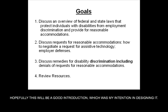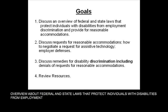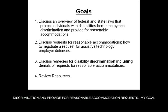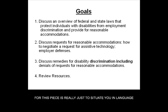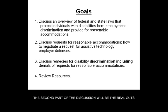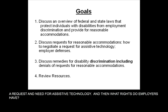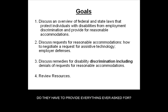The parts I've broken today's discussion into: first we'll talk about a general overview of federal and state laws that protect individuals with disabilities from employment discrimination and provide for reasonable accommodation requests. My goal is to situate you in language and the names of relevant statutes — what is available federally, what is available in California, what are the similarities and differences. The second part will be the real guts of today, which is reasonable accommodation requests and how to negotiate with an employer a need for assistive technology, and what rights employers have — whether they have to provide everything ever asked for. I'm calling that employer defenses.